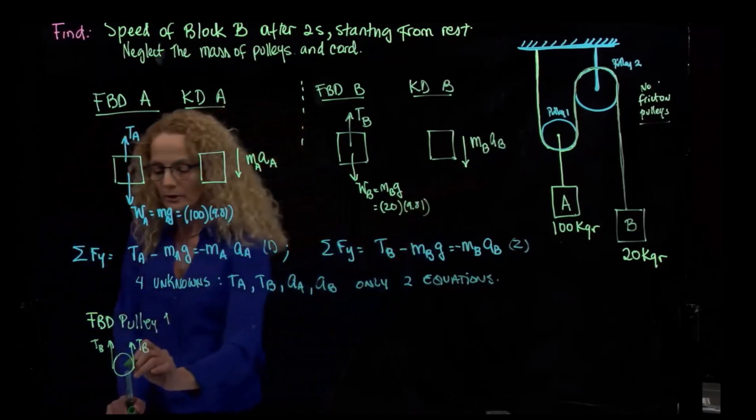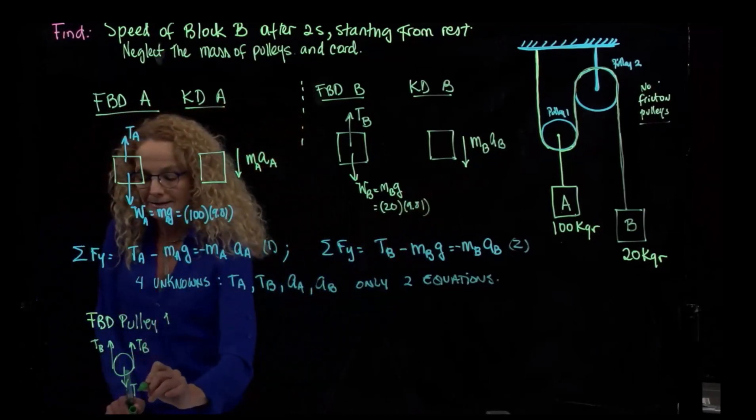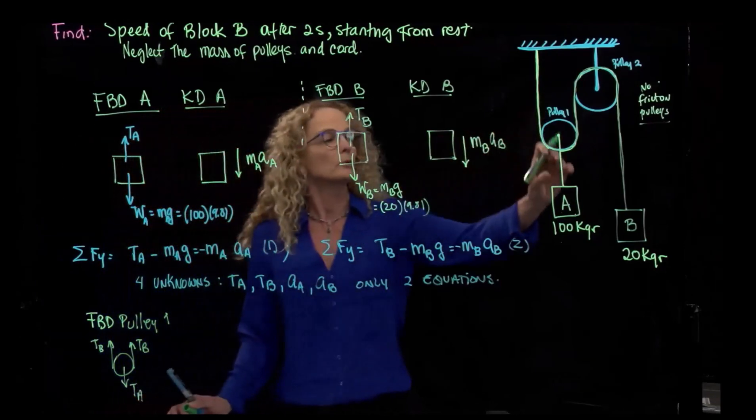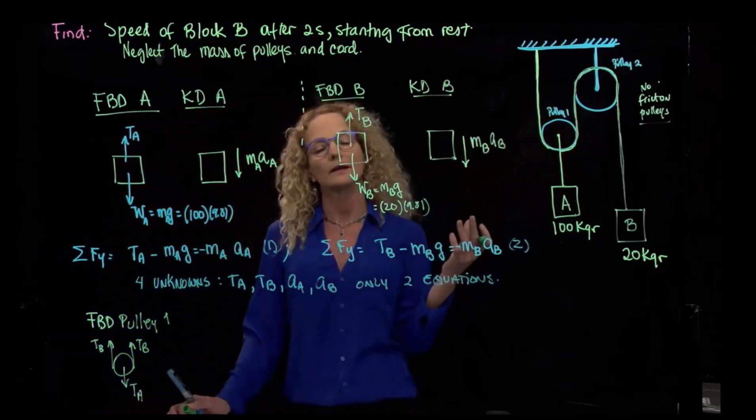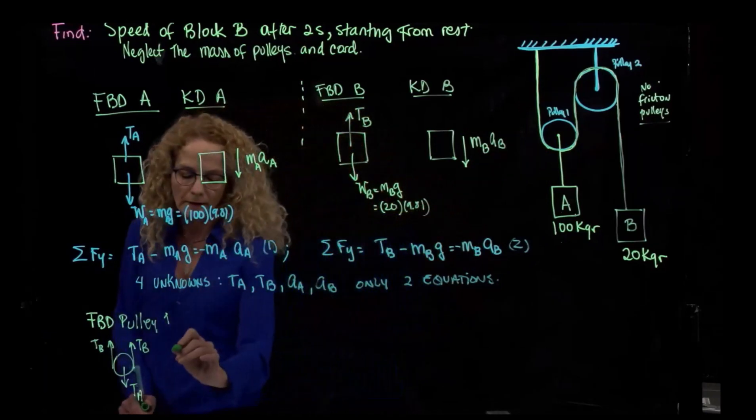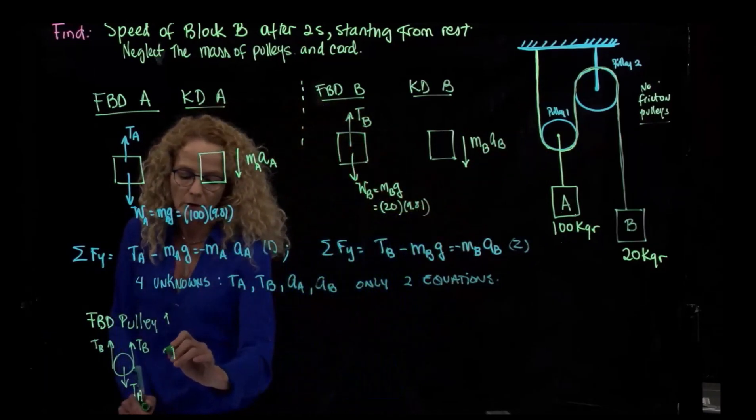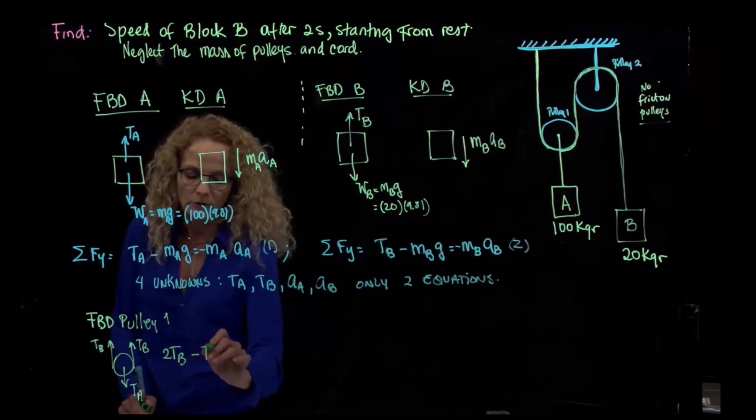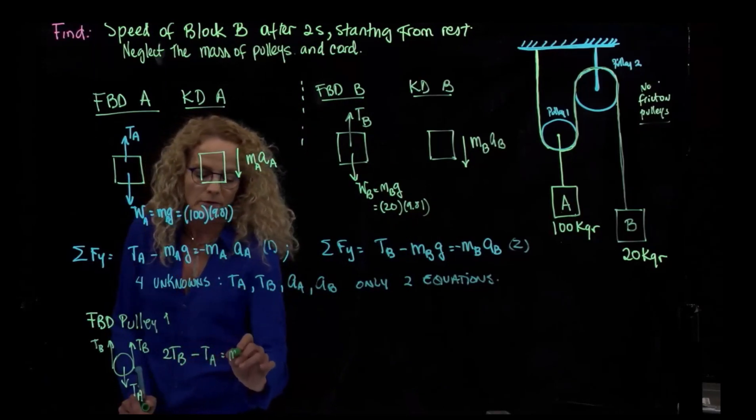But this is tension A. And even though the pulley is moving, we don't have any mass. Since we don't have any mass, when we do our equations of equilibrium, we will have 2TB minus TA equals mass of the pulley times acceleration of the pulley.